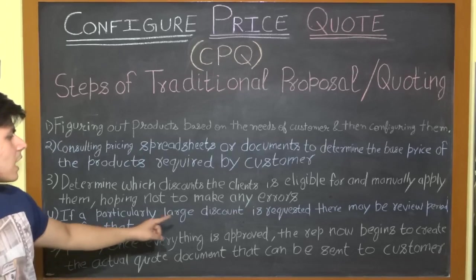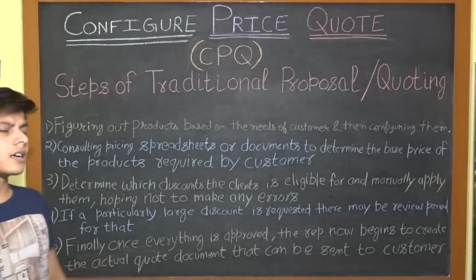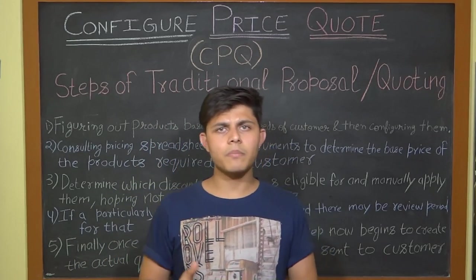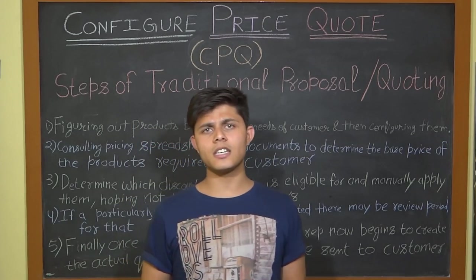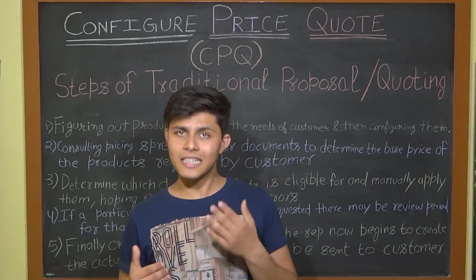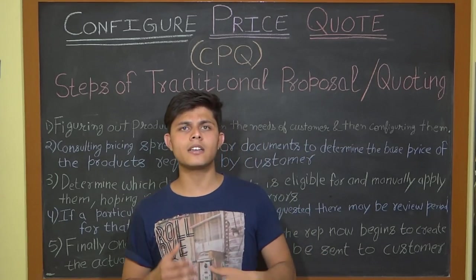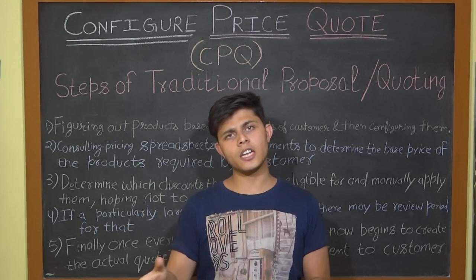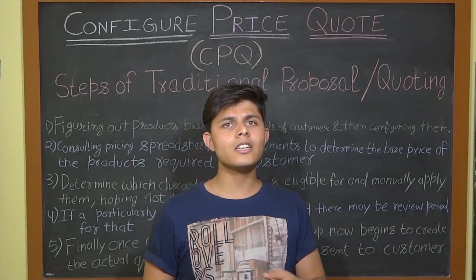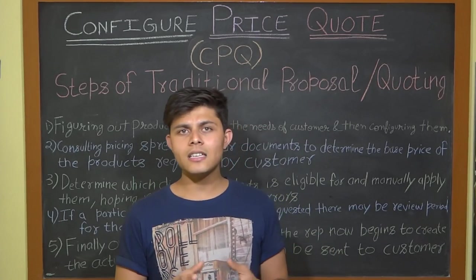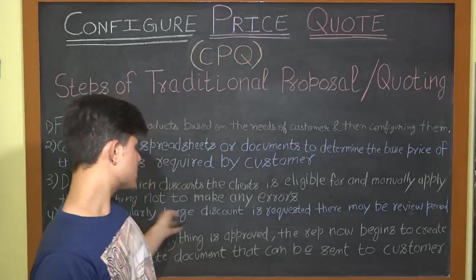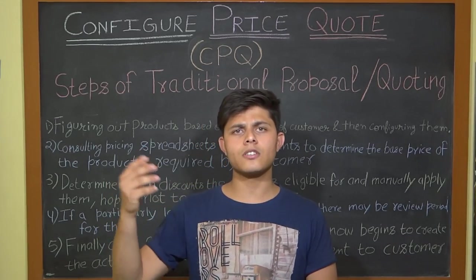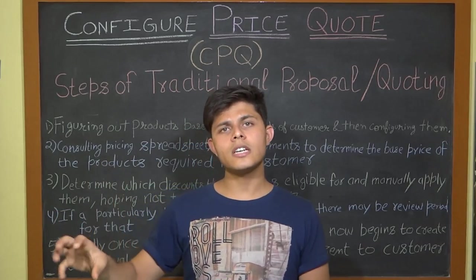Step four: if a particularly large discount is requested, there is a review period. For example, imagine a company with hundreds of sales representatives selling products and services daily. To get more sales, they might provide discounts of 40%, 30%, or any amount — which typically should not be applied without oversight. There's nothing to control that, so someone needs to review large discounts before they are approved.